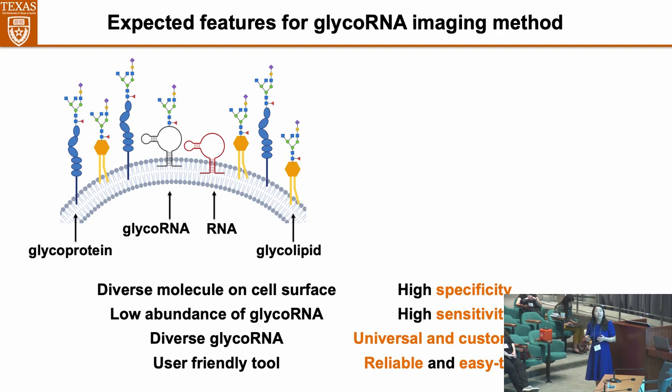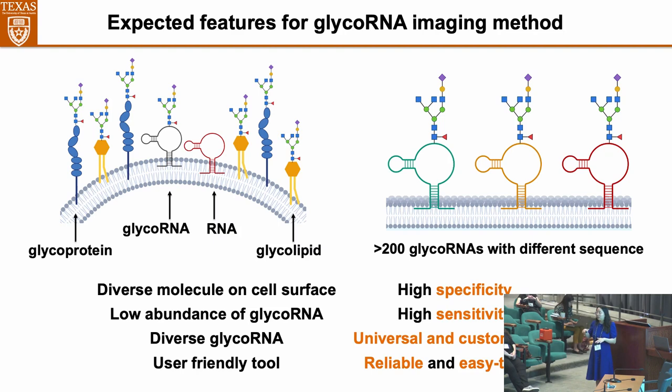But developing this camera is very challenging because on the cell surface there are a lot of glycoproteins, glycolipids, and non-modified RNA. So the camera should have very high specificity only for glycoRNA. Also, glycoRNA has low abundance, so the camera should have very high sensitivity. Since there are more than 200 glycoRNAs with different sequences, the camera should be universal and customizable. Finally, we wanted this tool to be user-friendly and reliable.